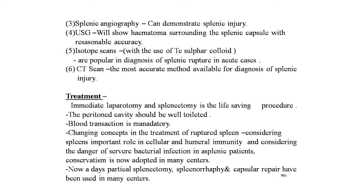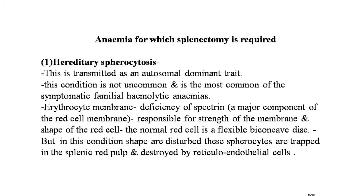Changing concepts in treatment of ruptured spleen: considering the spleen's important role in cellular and humoral immunity and the danger of severe bacterial infection in an asplenic patient, conservatism is now adopted in many centers. Splenorrhaphy and capsule repair have been used in many centers. The next topic is anemias for which splenectomy is indicated — which conditions require mandatory splenectomy?